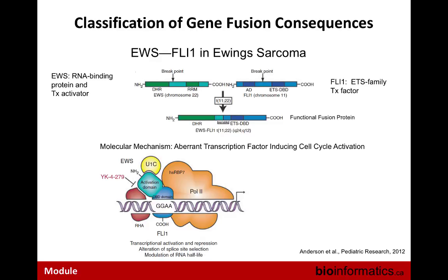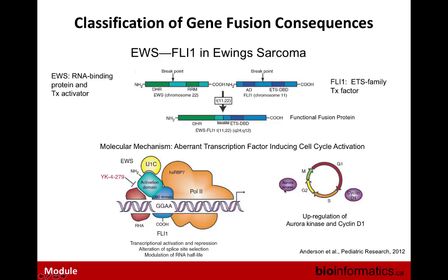EWS-FLI1 in Ewing sarcoma: here you have an RNA binding protein that's also a transcriptional activator, fused with another ETS family transcription factor, FLI1. This makes a functional fusion protein that binds DNA through a DNA binding domain from the FLI transcription factor, and has the transcriptional activation domain of EWS. It basically drives transcription at places where the transcription factor normally binds. This upregulates aurora kinase and cyclin D1, which are involved in the cell cycle, turning on cell cycle and driving proliferation.